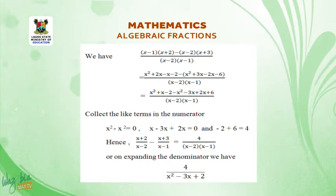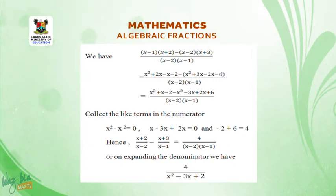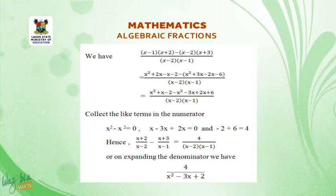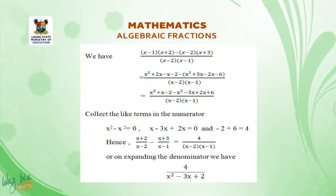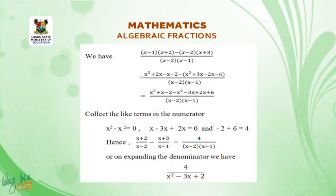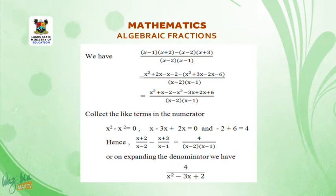Hence, x plus 2 all over x minus 2, minus x plus 3 all over x minus 1, equals 4 all over (x minus 2)(x minus 1). Or, on expanding the denominator, we have 4 all over x squared minus 3x plus 2.